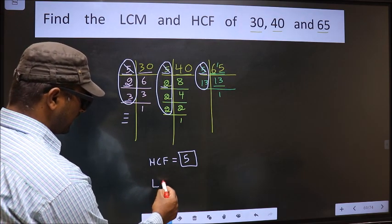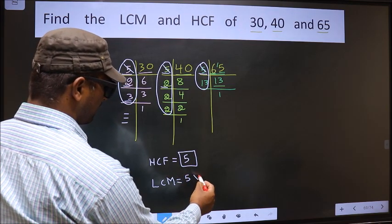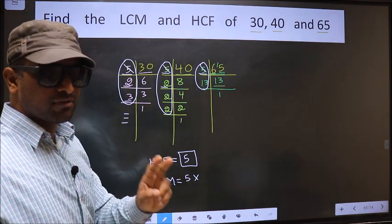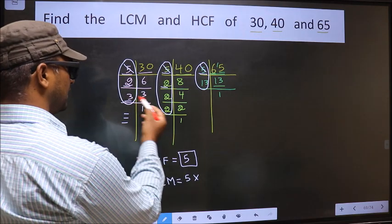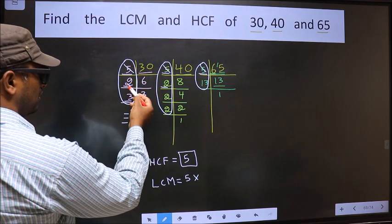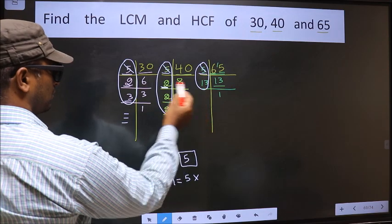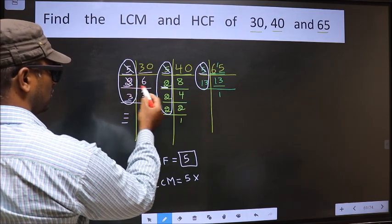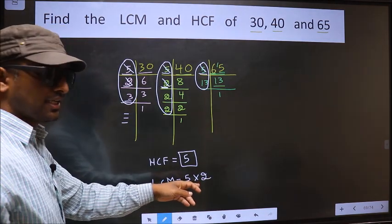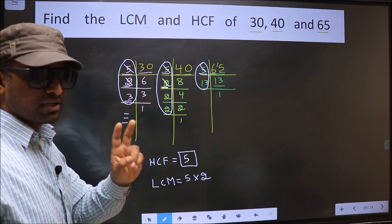Now to get LCM. Whatever HCF we got, to that we should multiply by the numbers which appeared either once or twice in these 3 places. What I mean is, over here, 2 is not cut. Do we have 2 here? Yes. Do we have 2 here? No. 2 is present in these 2 places, so you cut 2 and write here. To write a number here, it is enough if that number is present in 1 place or 2 places.